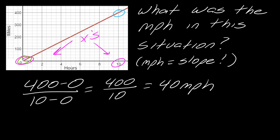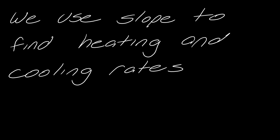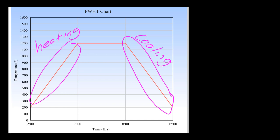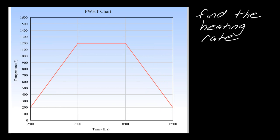Let's pivot to a more relevant example for welding. Heating and cooling rates — we actually use slope calculations for that. Here is a heating and cooling chart. This side represents the heating, this side represents the cooling. What you want to do is find the slope of each one of these line segments. We're going to start by finding the heating rate. Pause the video here, read off the graph, and then hit play when you're ready.